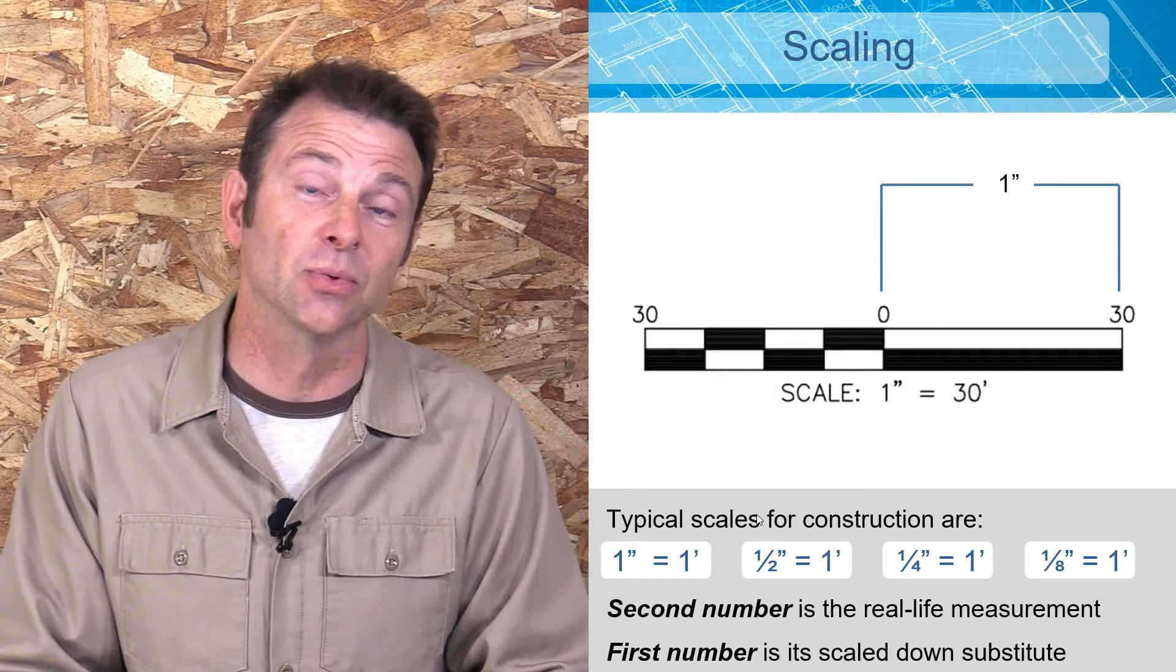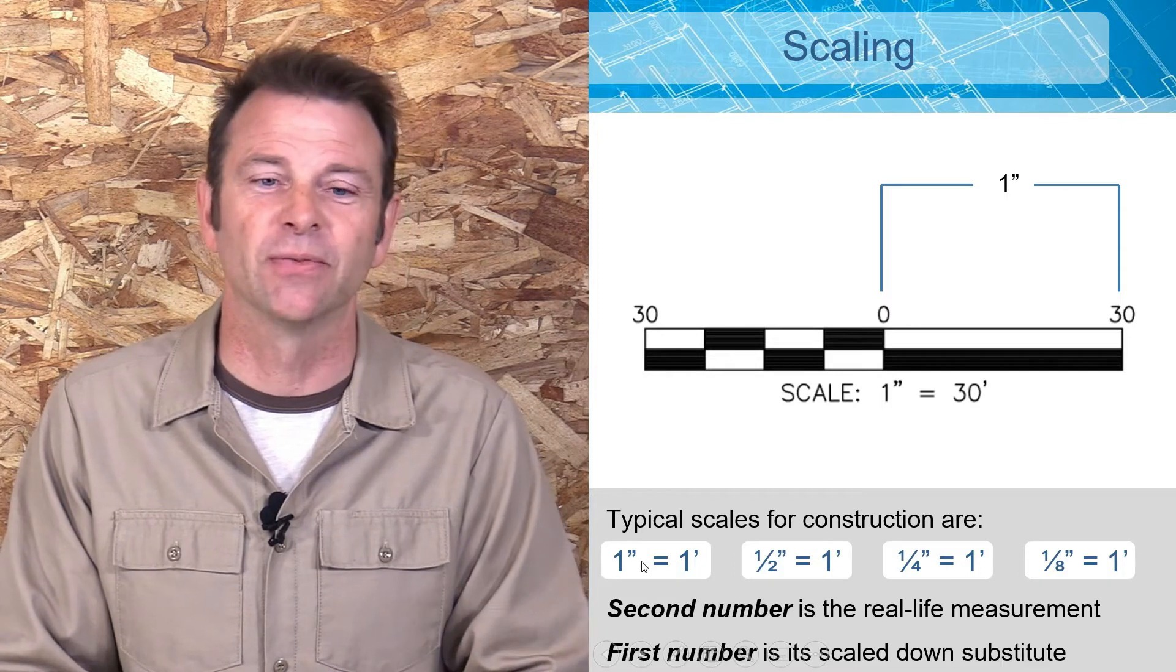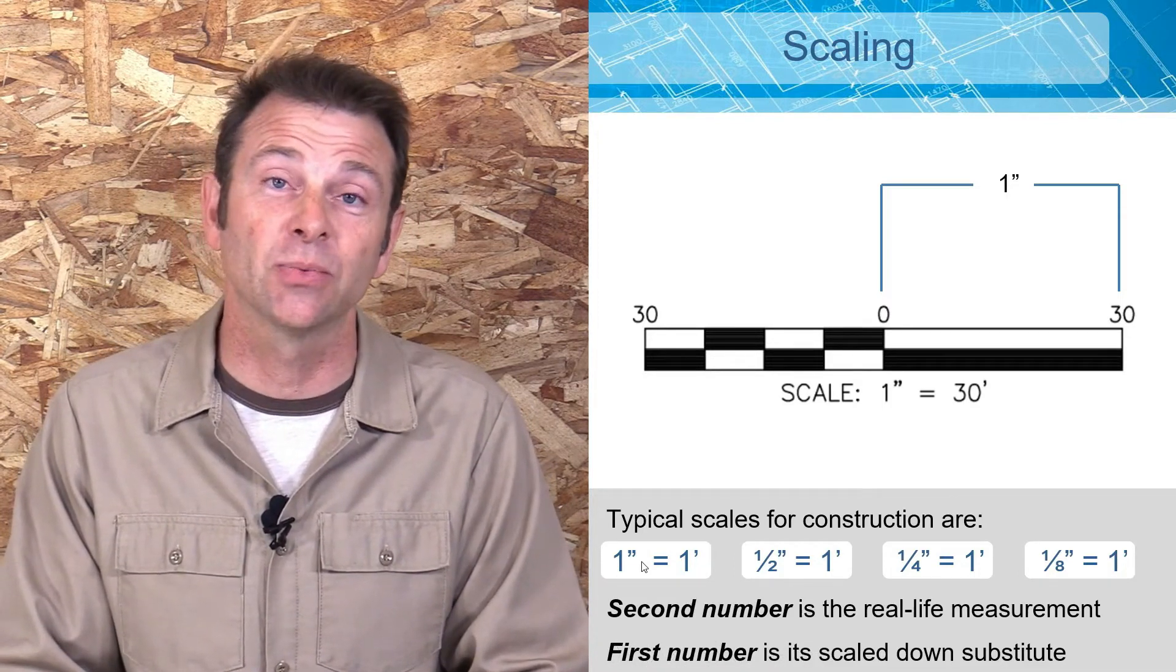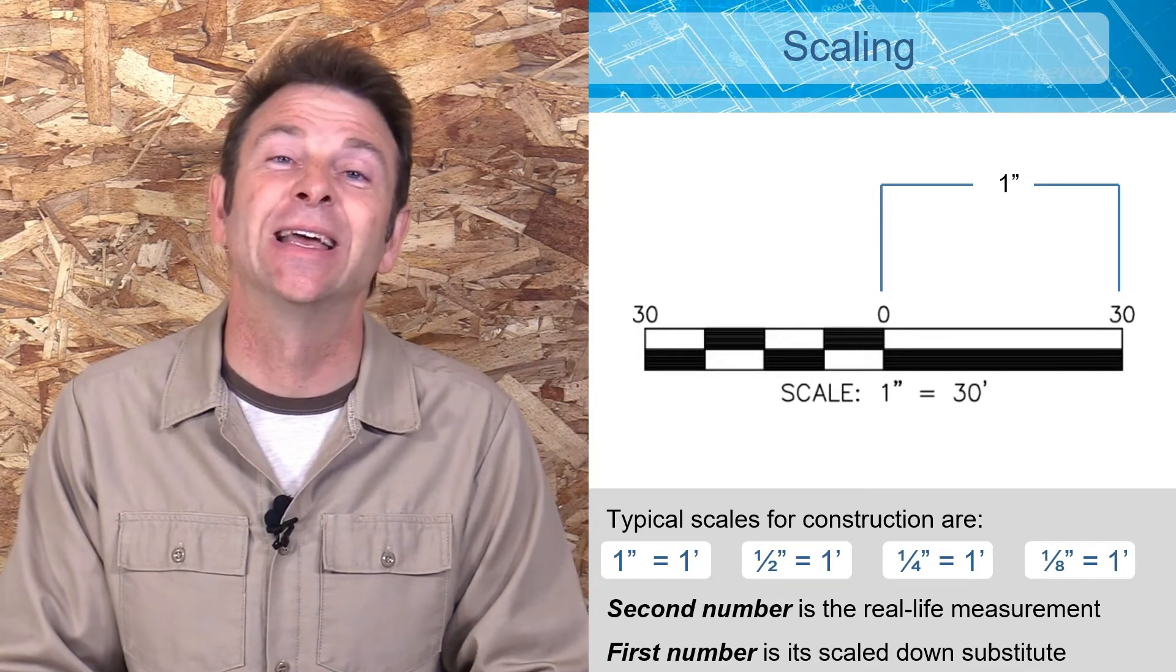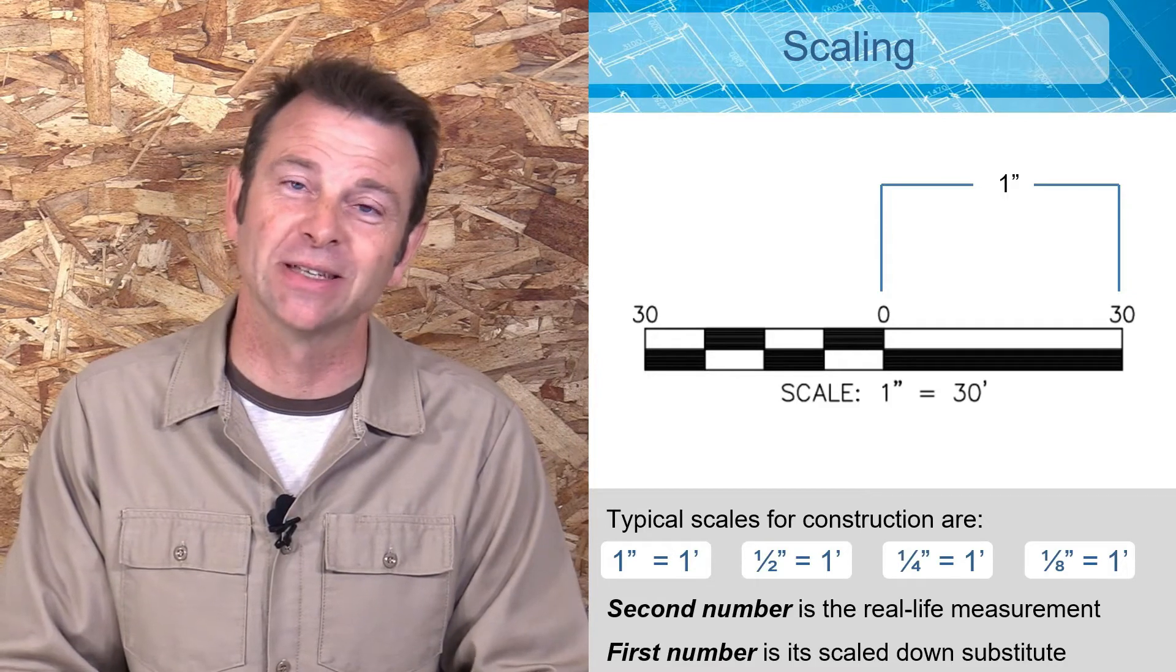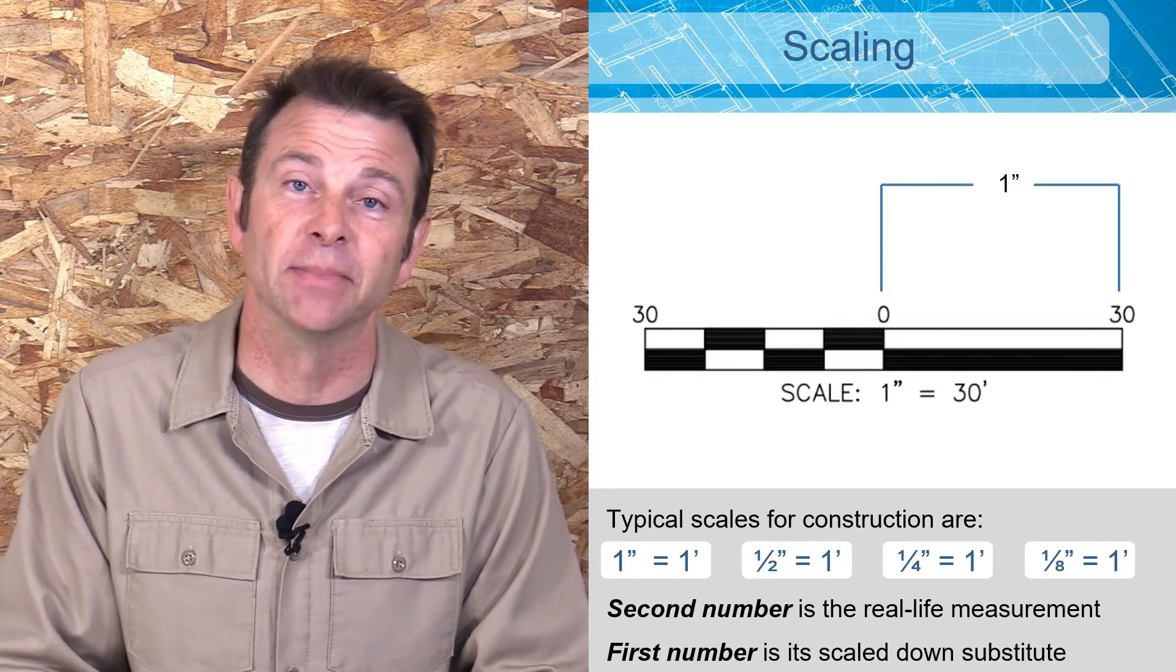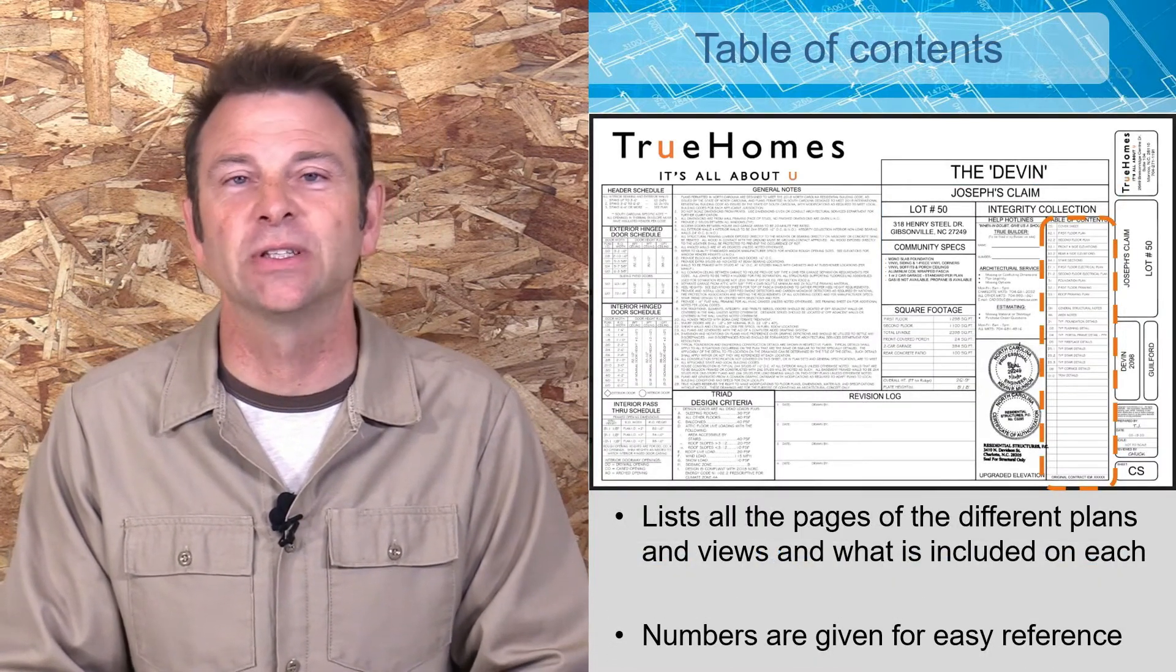Some typical scales that you'll see in construction are always going to reference a foot, and we're going to change the inch representation of that foot. We can use a ruler, an architect's rule, to measure those. A typical one would be one inch equals one foot. It could be one half inch equals one foot, a quarter inch equals one foot, or an eighth inch equals one foot. Always remember that your first number is your scaled down representation on your drawing. Your second number is always going to be your real life measurement.